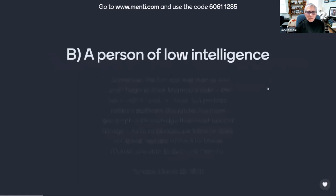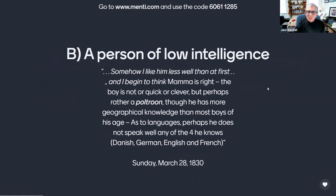Or is it B, a person of low intelligence, as referred to by Anne in speaking of Little de Hagemann in this journal entry of Sunday, March 28th, 1830? 'Somehow I like him less well than at first, and begin to think Mama is right. The boy is not quick or clever, but perhaps rather a poltroon, though he has more geographical knowledge than most boys of his age. As to languages, perhaps he does not speak well any of the four he knows — Danish, German, English, and French.'